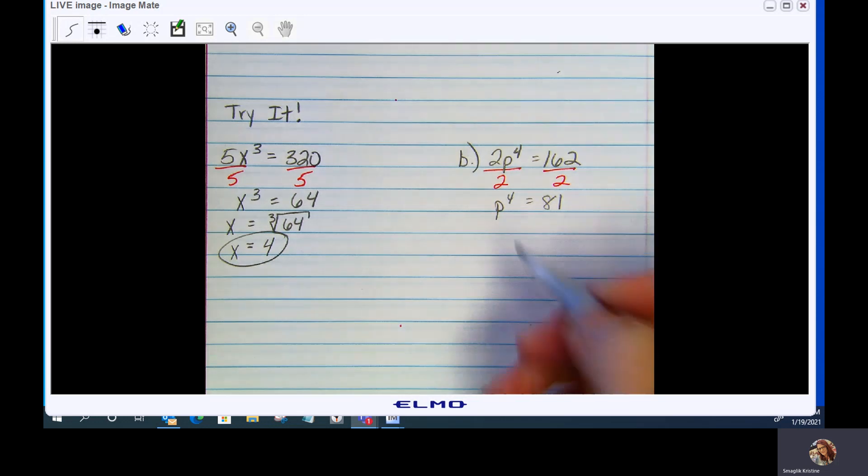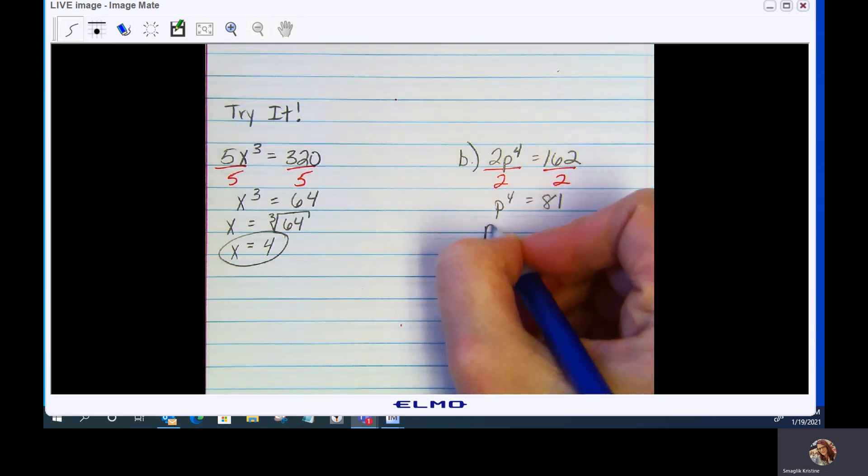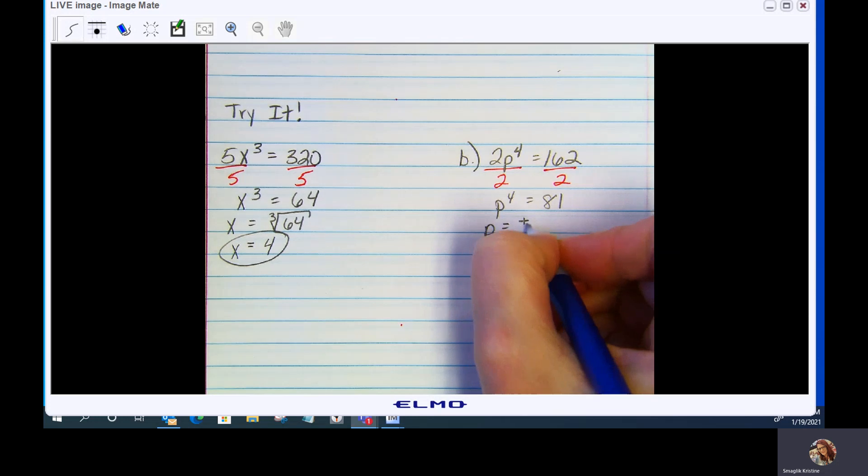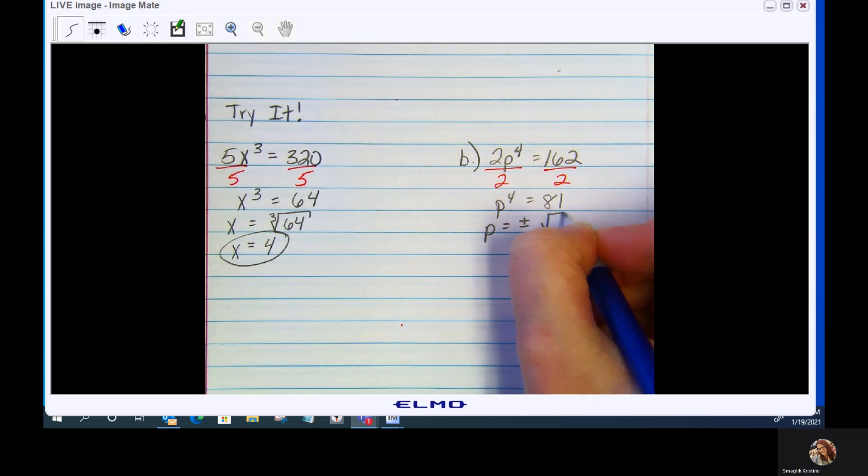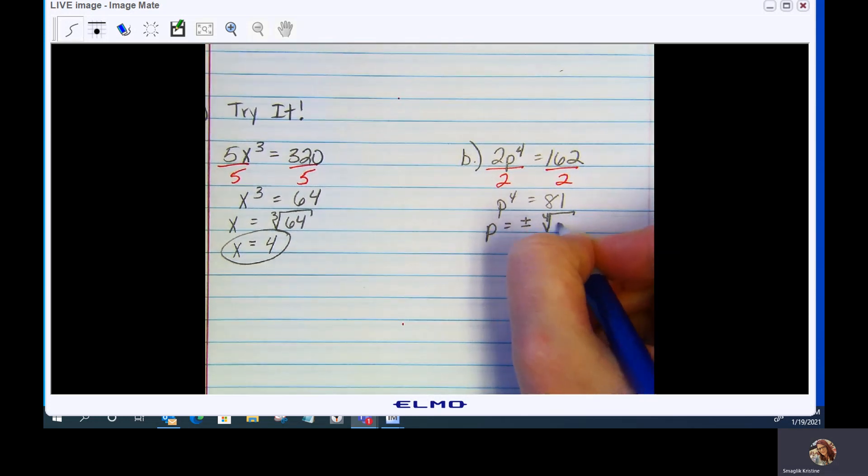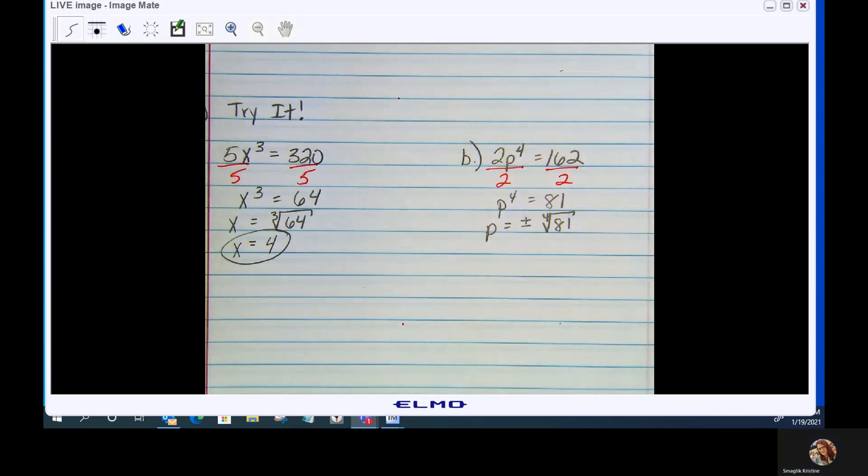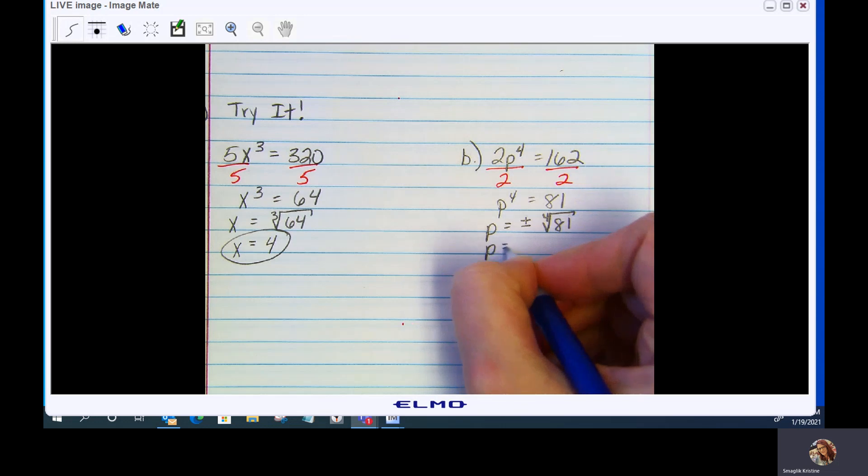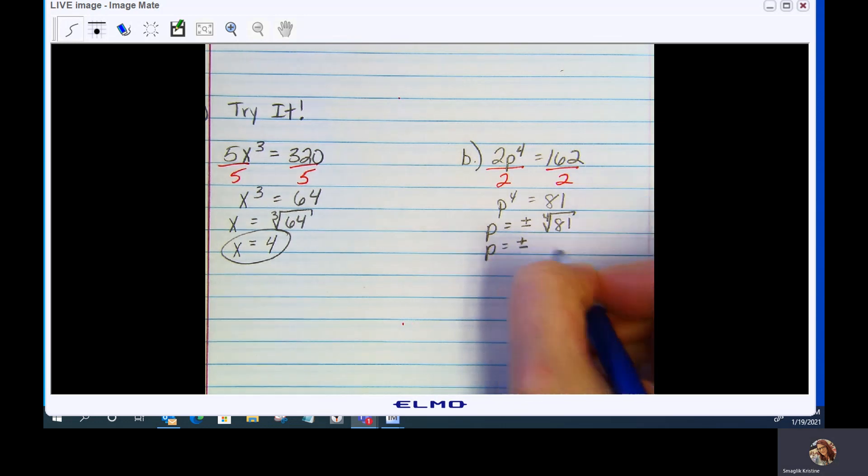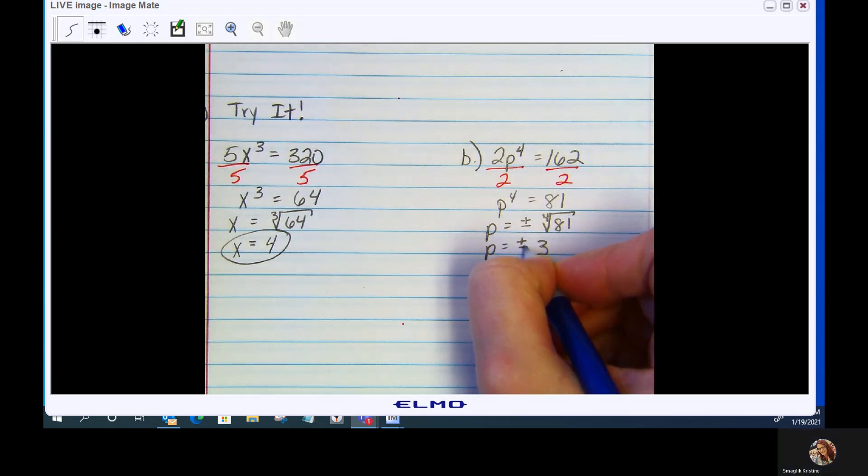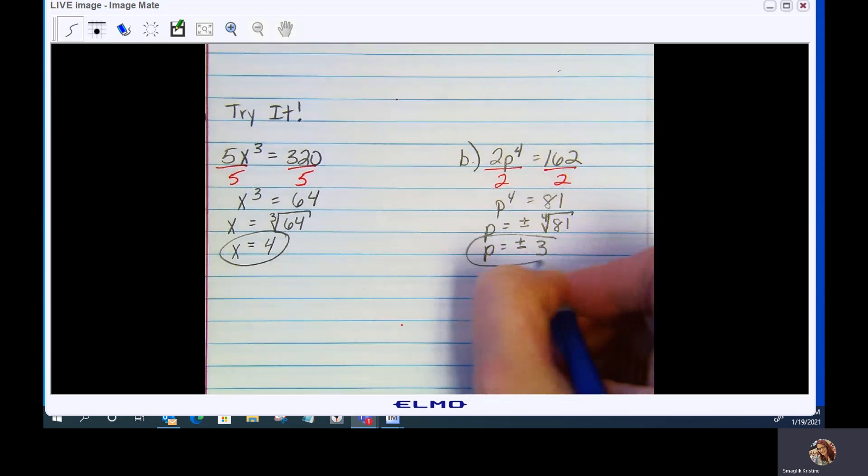Now I'm going to take the 4th root of both sides. And again, because this is even, we need to do plus minus. p equals plus or minus the 4th root of 81. And that is going to be 3. And that is your final answer.